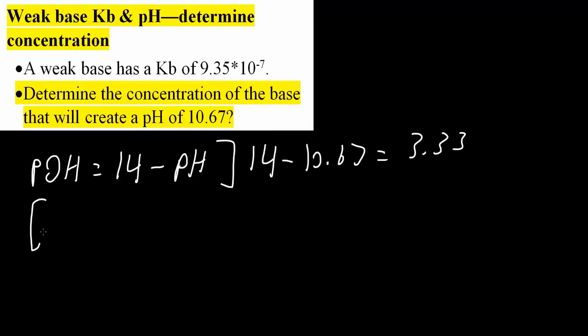And so OH minus will equal 10 raised to negative pOH. So 10 raised to negative 3.33. And so we would get 0.00047 molar.